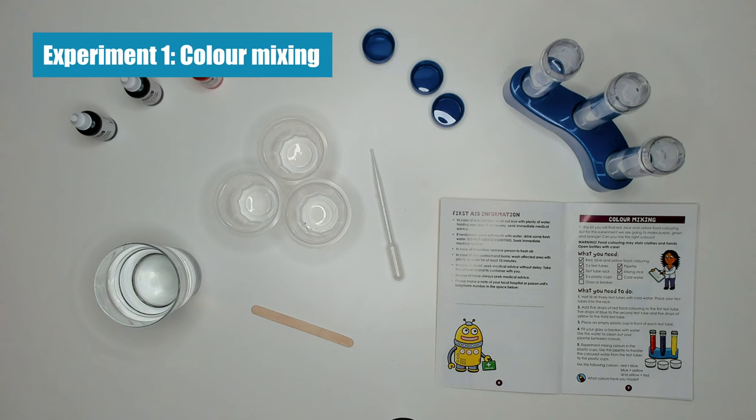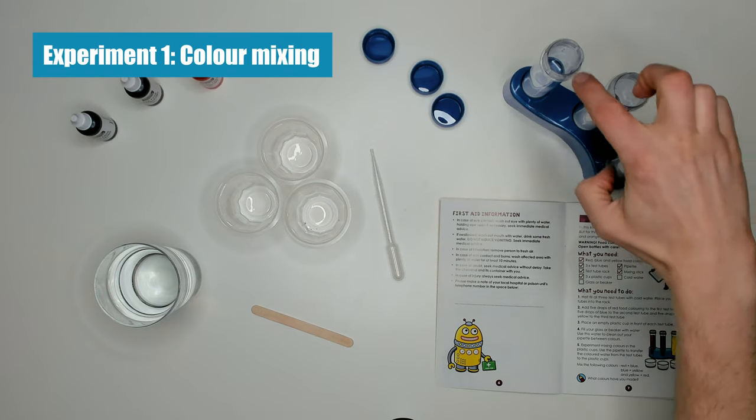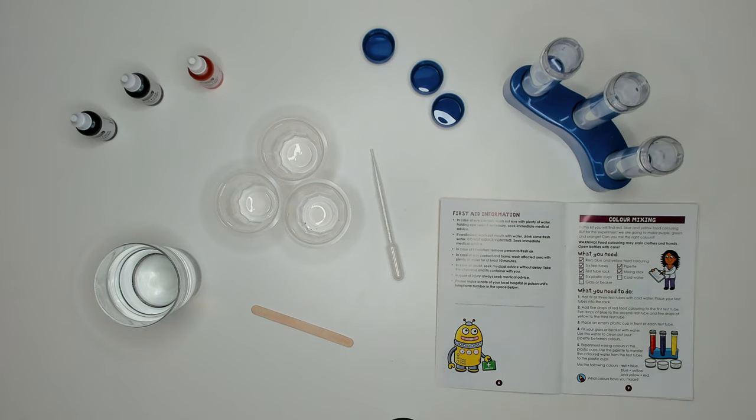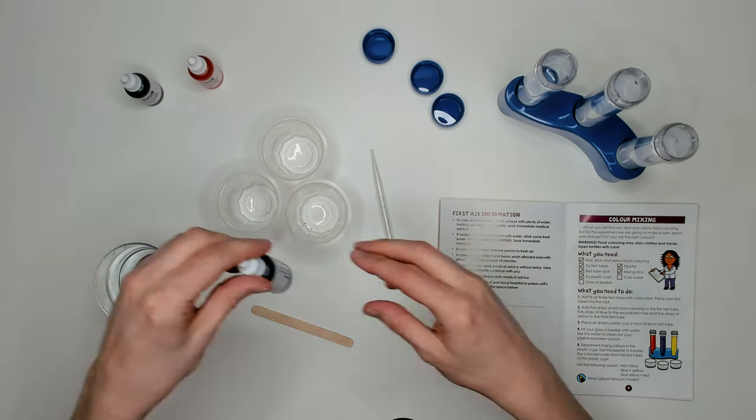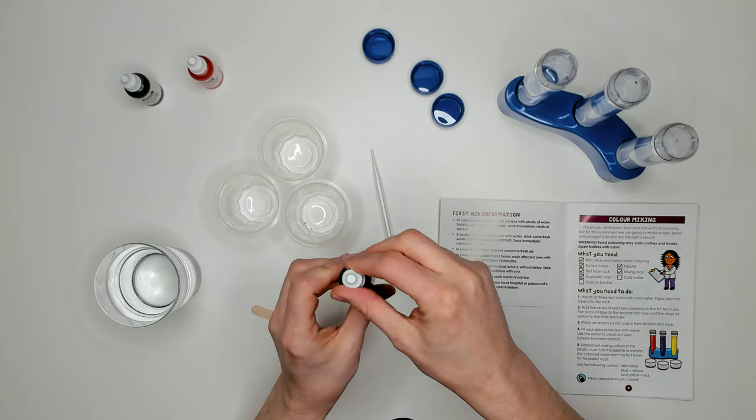This first experiment is about mixing primary colors together to create secondary colors. I've half filled each of these test tubes with cold water and placed the test tubes into the test tube rack.